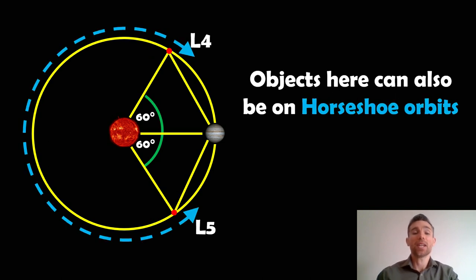Now if there was a significant perturbation, so they were knocked off the point quite a bit, then they would have a horseshoe orbit. That actually means they can go from L4 all the way around to L5, circulate that, and then come back around to L4 again. So these are known as horseshoe orbits. They're very unusual, kind of chaotic, depending on how you're looking at it.